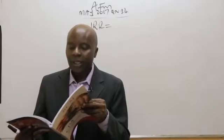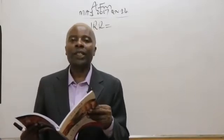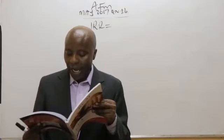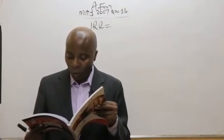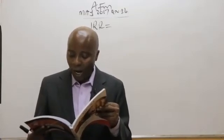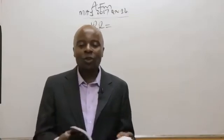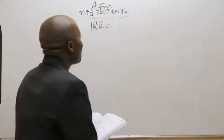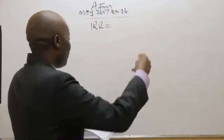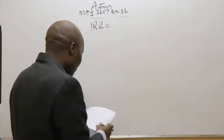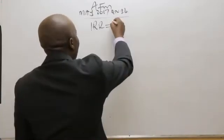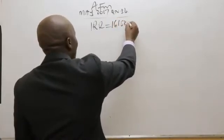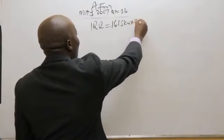For Project C, I can see the cash outlay — the initial cost is $375,000. And then the annual net cash flow is $161,524.